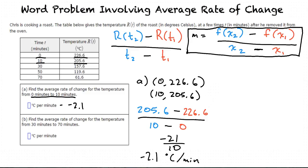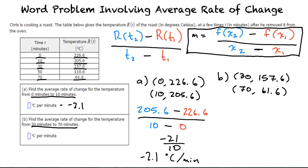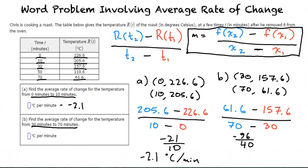Basically, a rate of change is a speed. Can you find the second average rate of change we are asked for? I'll give it a try. It's asking for 30 minutes to 70 minutes, so the two points are (30, 157.6) and (70, 61.6). Substituting into the formula: 61.6 minus 157.6 divided by 70 minus 30. This equals negative 96 over 40, which equals negative 2.4 degrees Celsius per minute, right? Yes, good job.